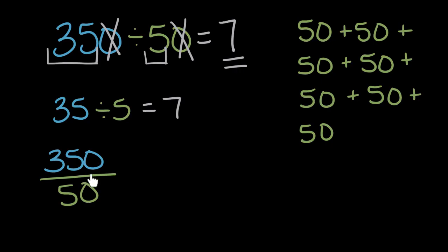In this case, because there's zeros on the end, we know they're both multiples of 10, so we can divide them both by 10. We can divide our numerator and our denominator by 10.